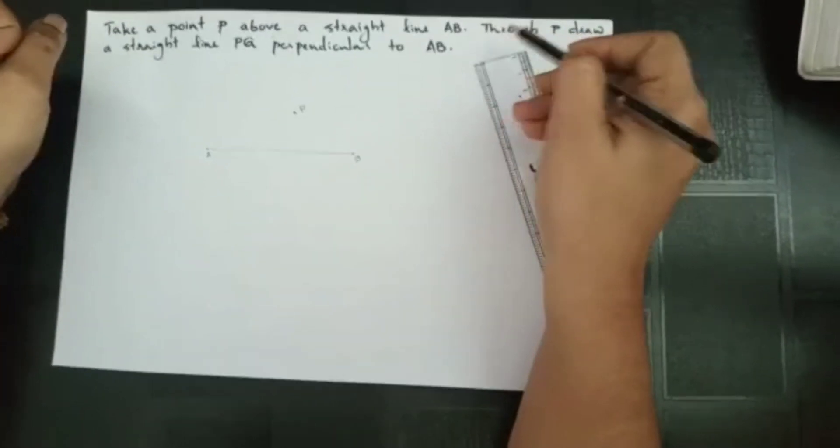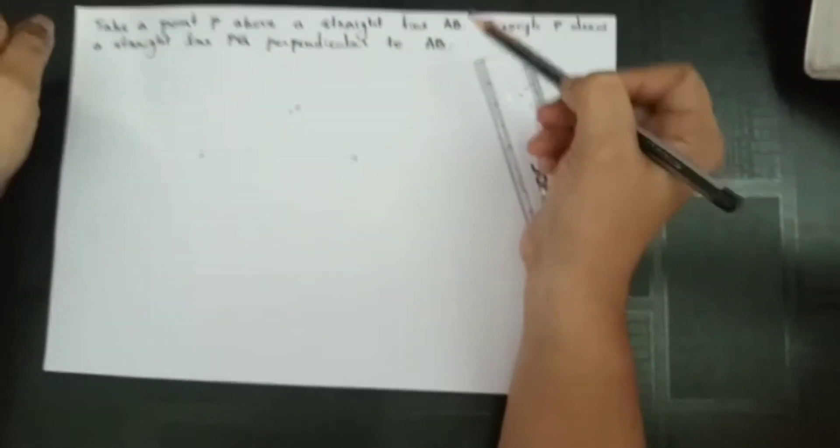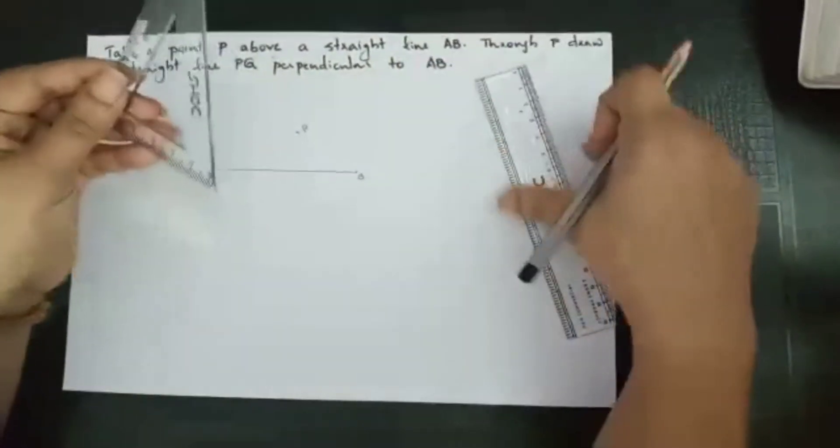So what we have to do now? Through P, draw a straight line PQ perpendicular to AB. So for that, we have to use our set square and a ruler.